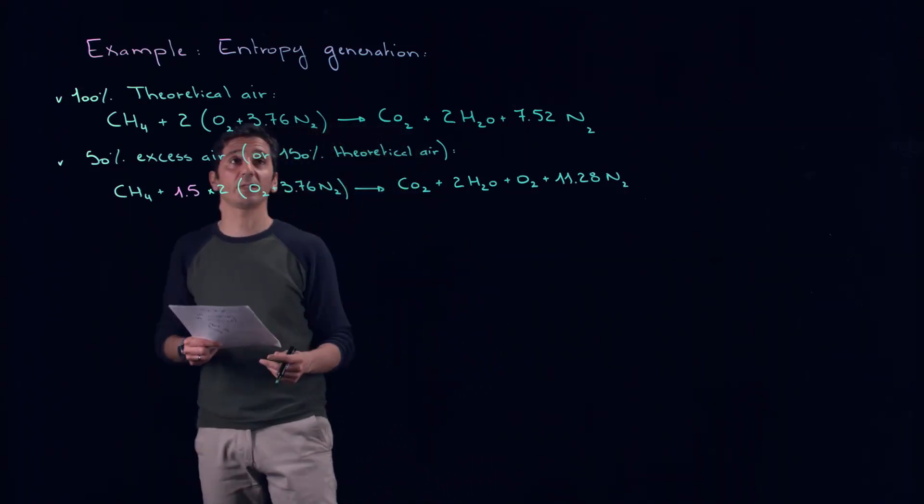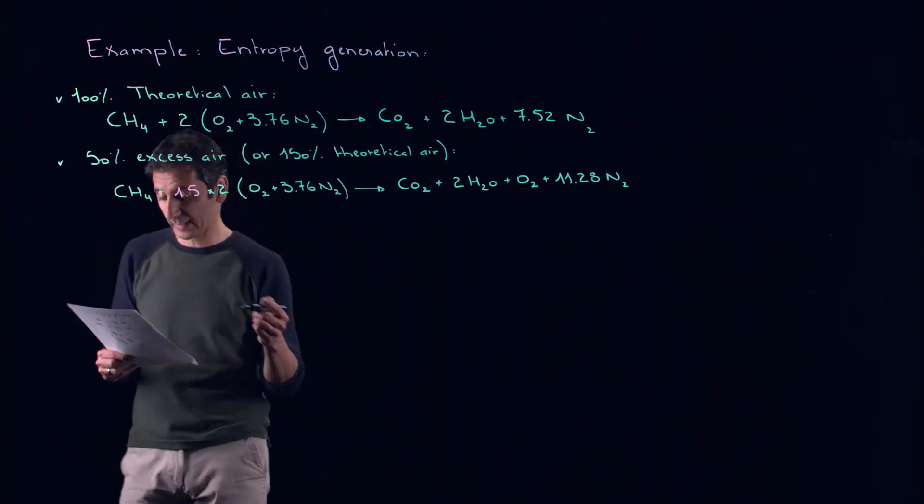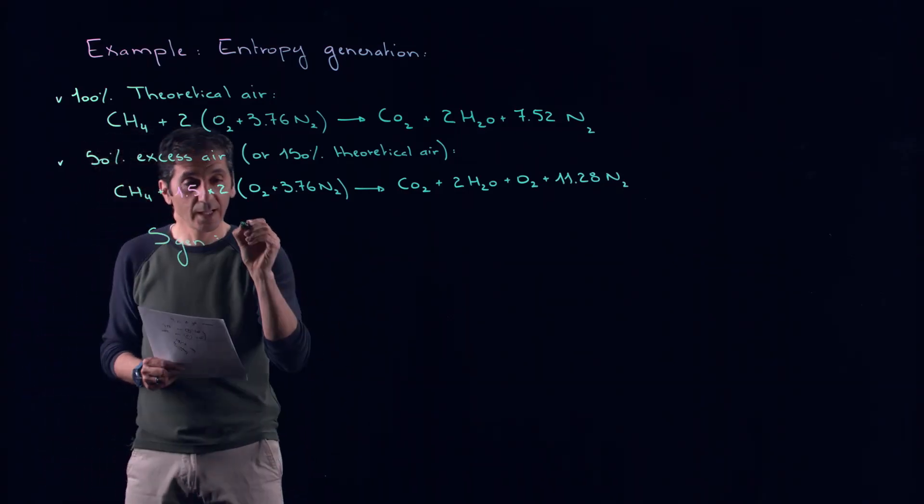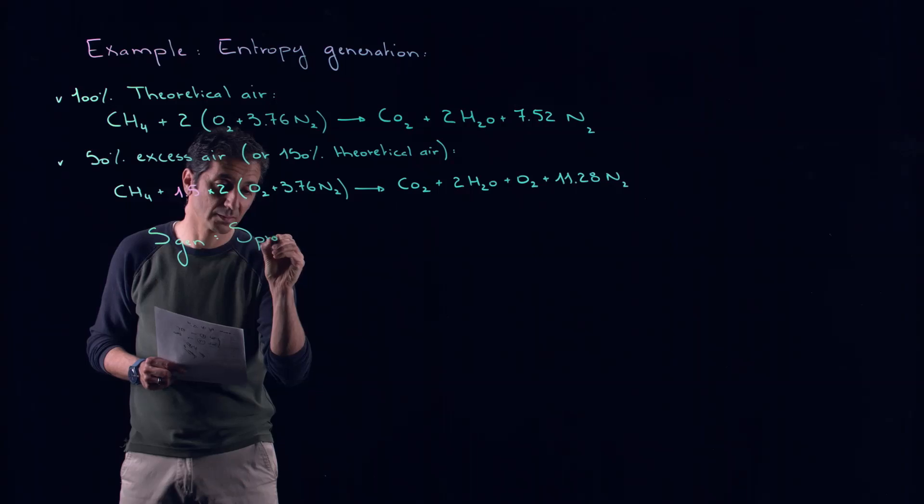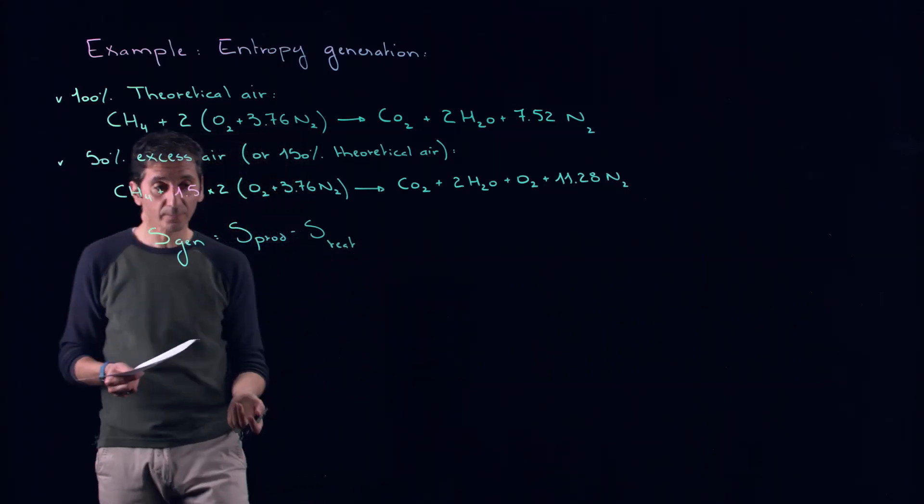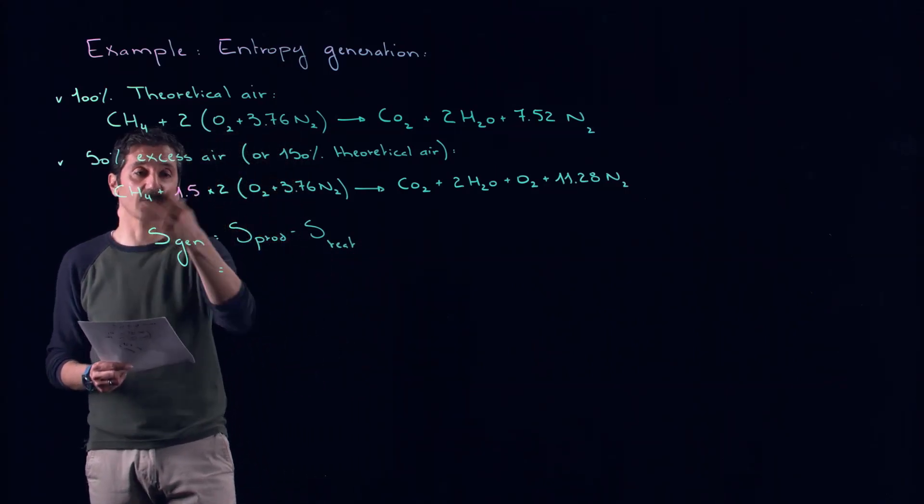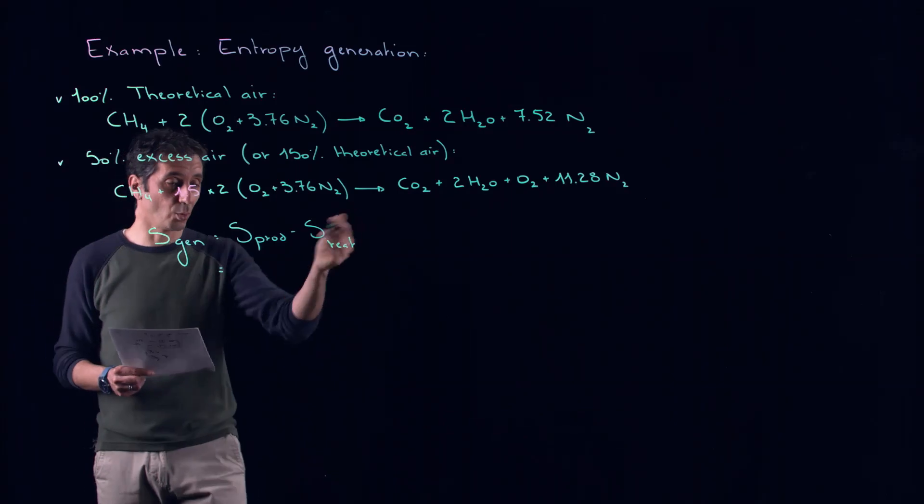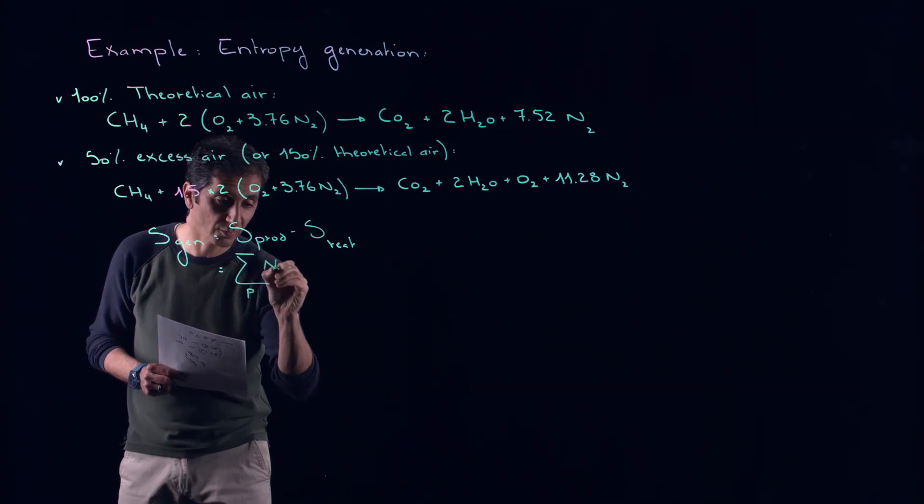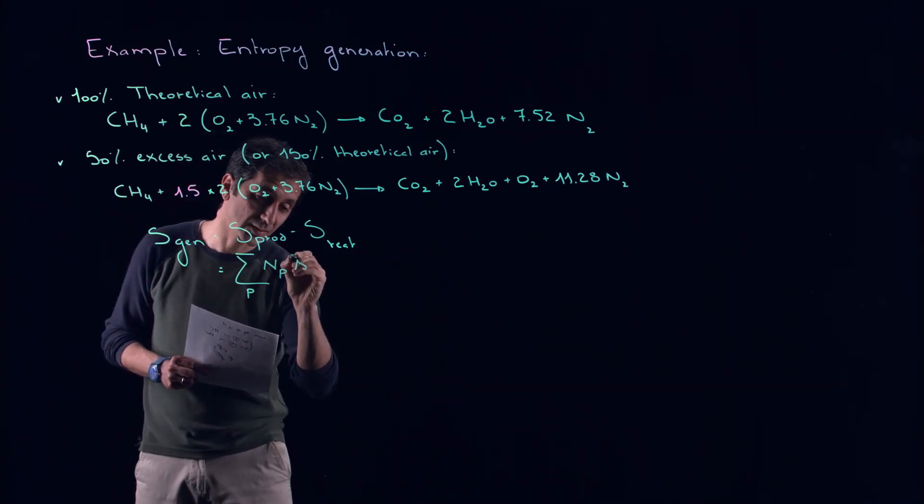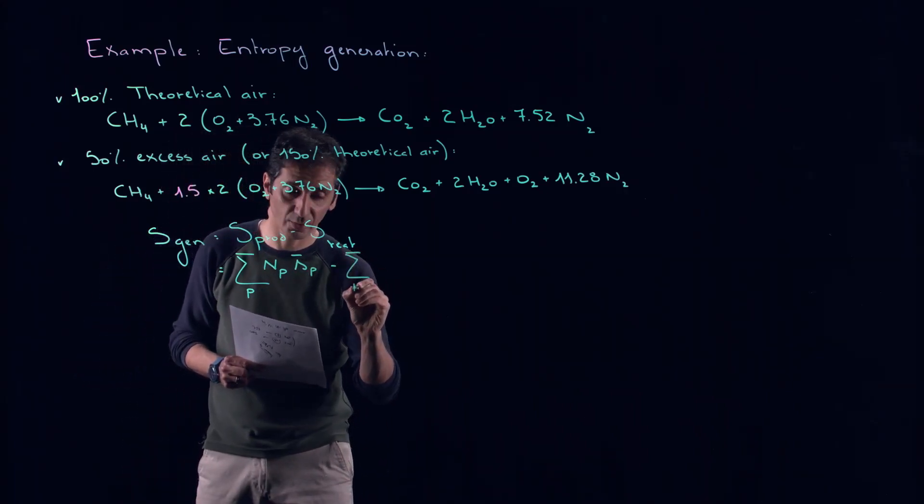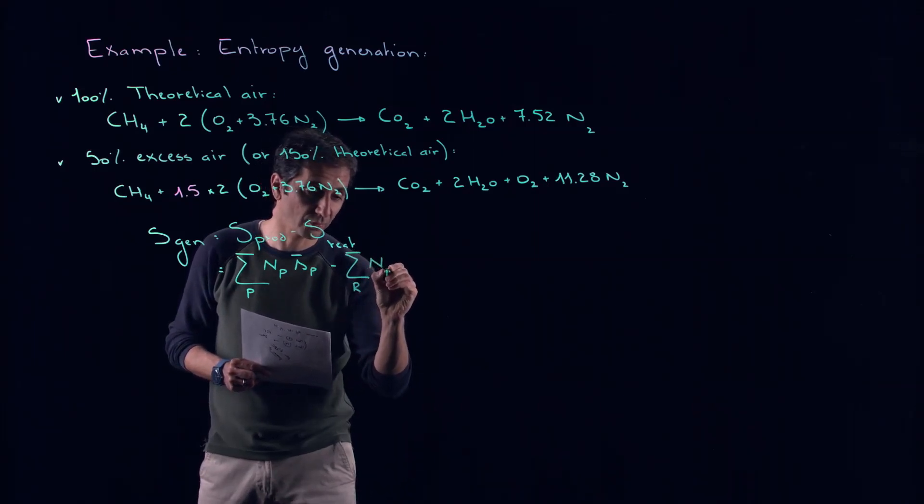We know that S generated is simply equal to S of the products minus S of our reactants. We can do this for all the products considering their number of moles, so this is the summation over all our products of the number of moles of each product times S bar of each product minus the summation over all our reactants of the number of moles of each reactant times S bar for each reactant.